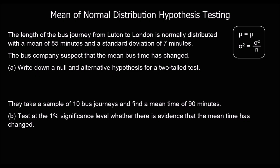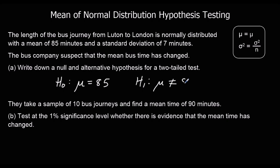Here we've got another question. The length of a bus journey from Luton to London is normally distributed with a mean of 85 minutes and a standard deviation of 7 minutes. The bus company suspects that the mean bus time has changed. Write down the null and alternative hypothesis for a two-tailed test. The null hypothesis is that the mean is still 85 minutes. The alternative hypothesis, since it's a two-tailed test, is simply that the mean is not 85 minutes — so it could be either higher or lower.